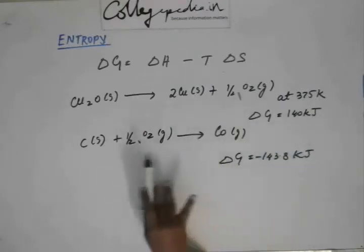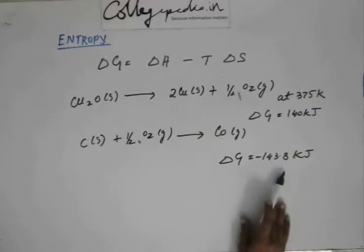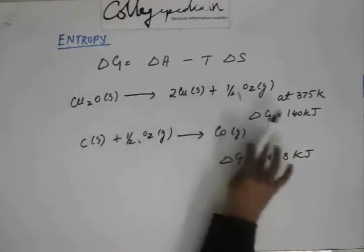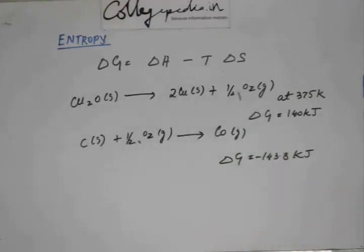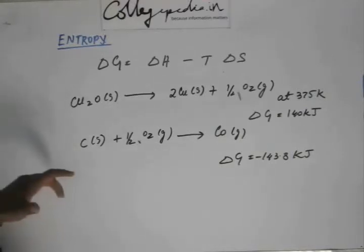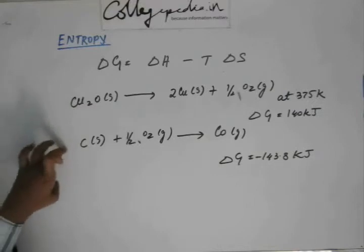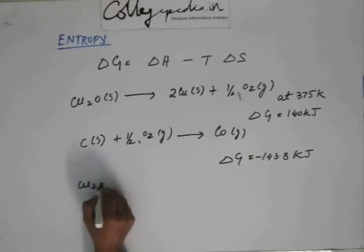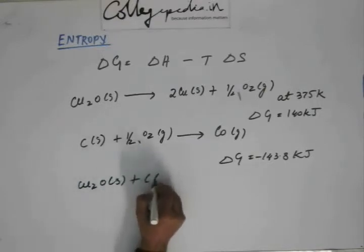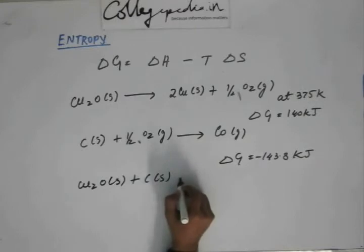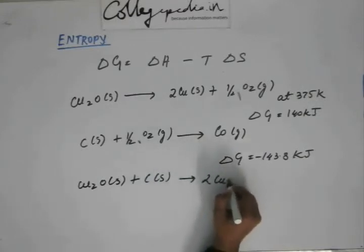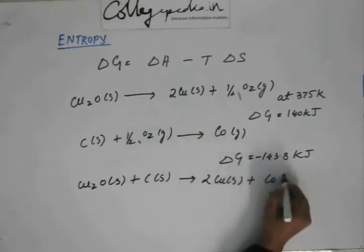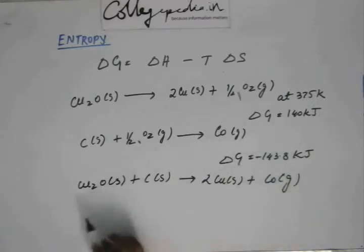This carbon and half of oxygen gives you carbon monoxide. Now delta G for this reaction is minus 143.8 kilojoule. Now this reaction is spontaneous because delta G is negative. This reaction is not spontaneous because delta G is not negative. However, if we have these two reactions together, suppose I add these two reactions, then that reaction would become Cu2O solid plus carbon solid is going to give 2Cu solid plus CO gas. This is the net reaction.